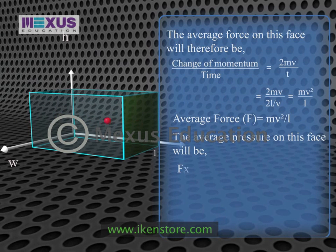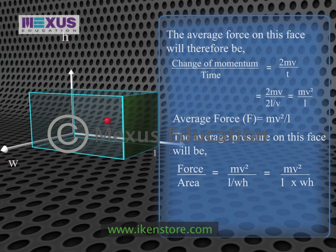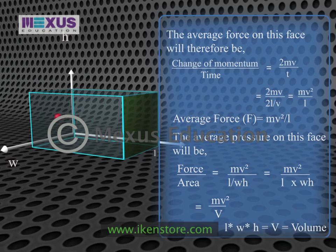The average pressure on the face will be force divided by area — that is, force MV²/L divided by the area, which is width times height (WH). This gives us MV² / (L × W × H), which is the volume of the box. We then replace L × W × H with capital V, denoting volume.